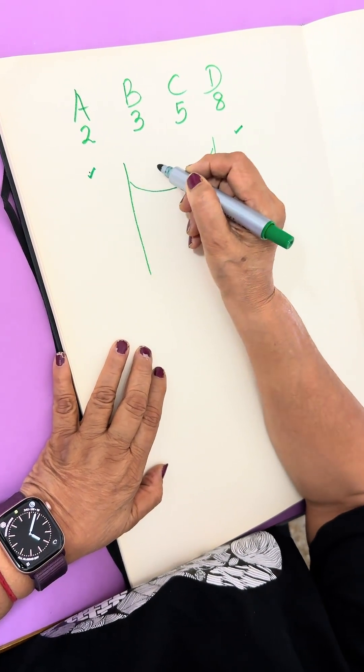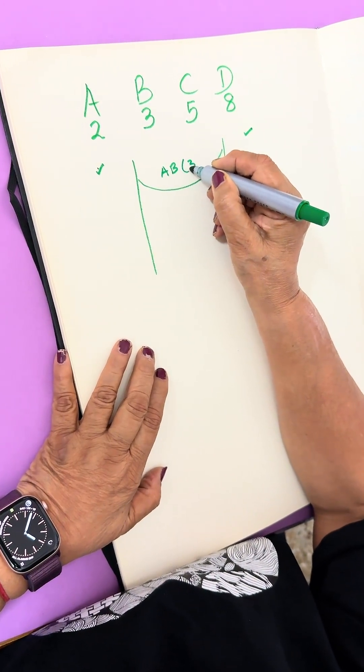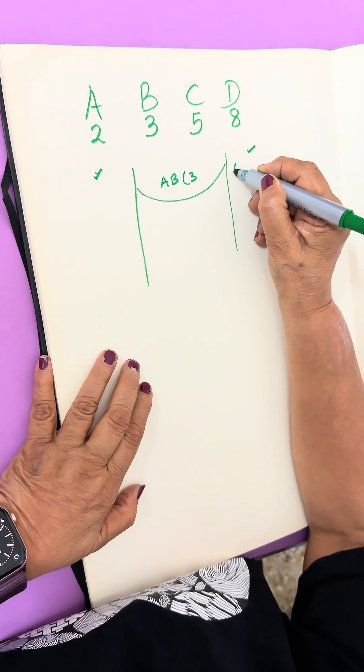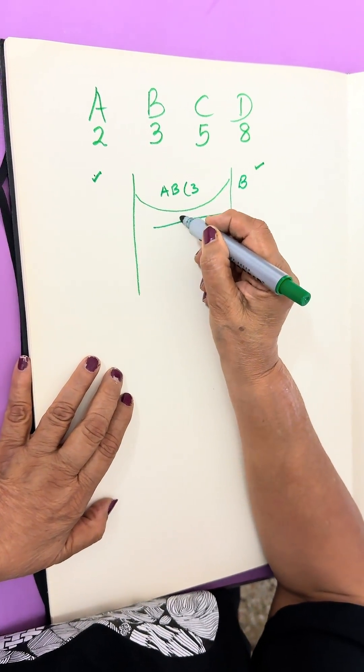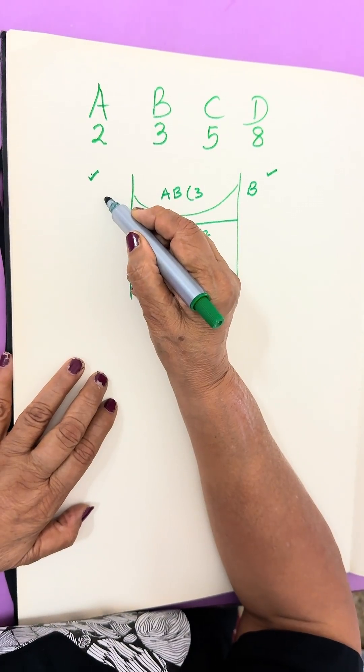First, A and B will go and they will take 3 minutes to reach this side. Now A will come back and it will take 2 minutes. Here C and D were left, and C and D are here.